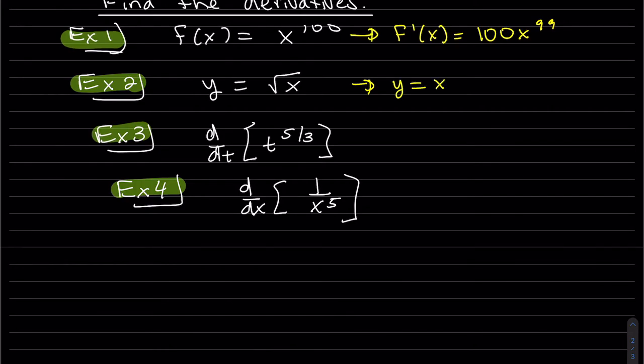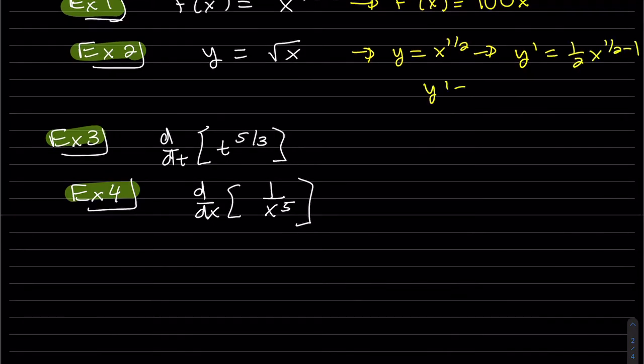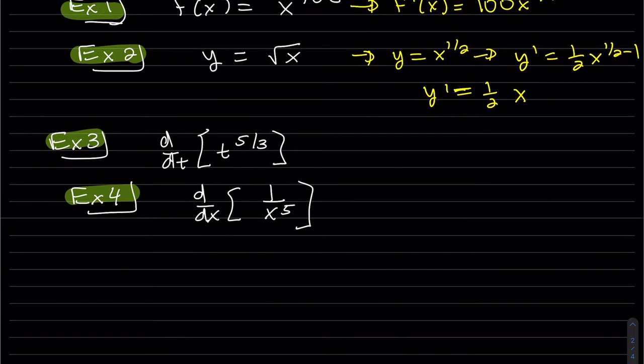So first, we want to write this as a power. It's a half power, y prime. Half goes in the front, and then it's a half minus 1, and 1 half minus 1 is minus 1 half. And this one we had in the last video, and this one we had in the last video using the definition.